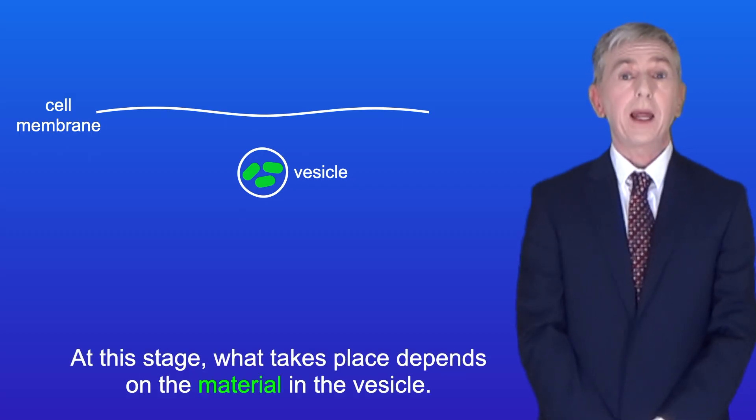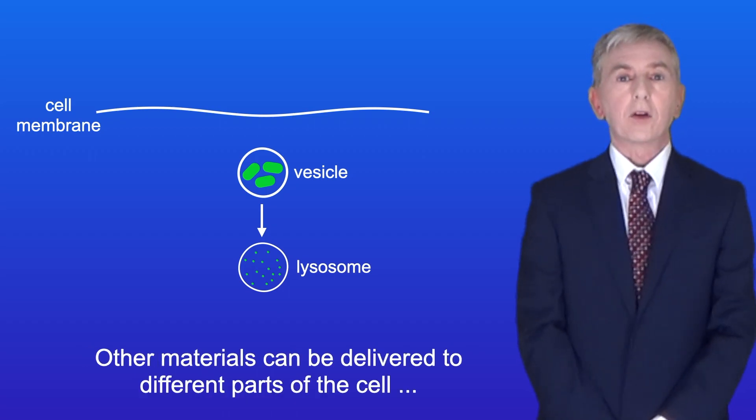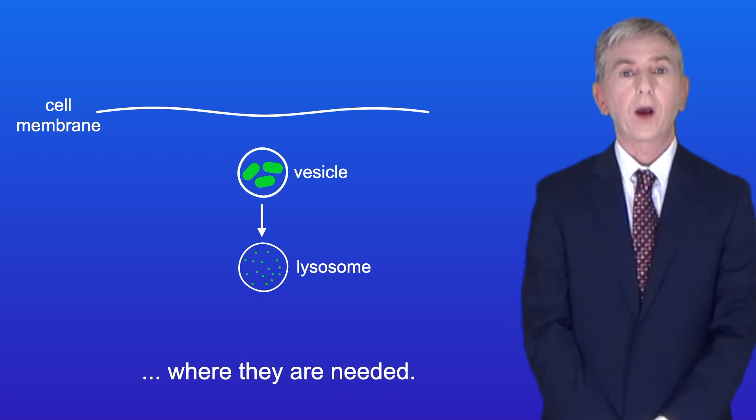At this stage, what takes place depends on the material in the vesicle. For example, bacteria are digested in lysosomes. Other materials can be delivered to different parts of the cell where they're needed.